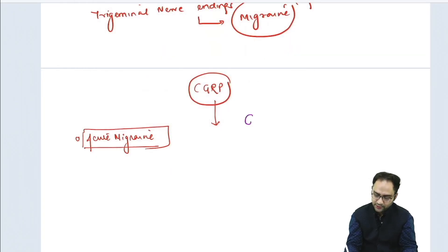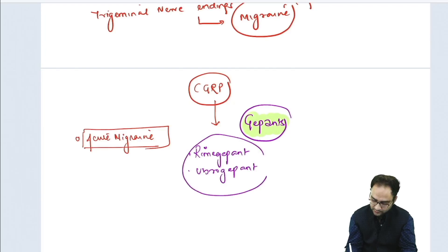These are also known as gepants. Some of the CGRP analogues that are being used orally for acute treatment of migraine are rimegepant and ubrogepant. These are the two drugs that are used orally for acute attack of migraine.